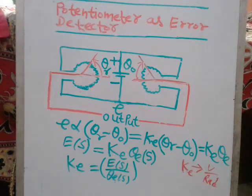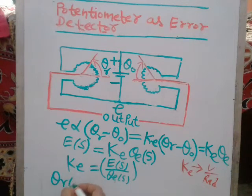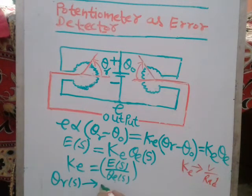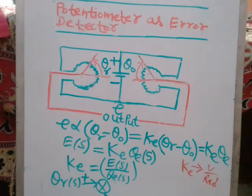If you want to draw the block diagram, here it is. The reference signal is theta(s), representing the reference angular position. The other input is theta_naught, the output angular position.